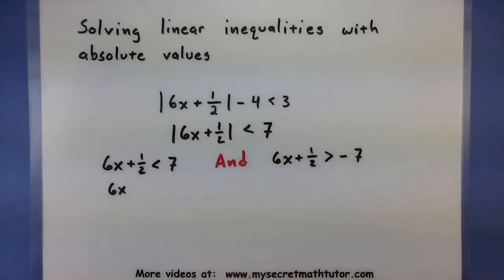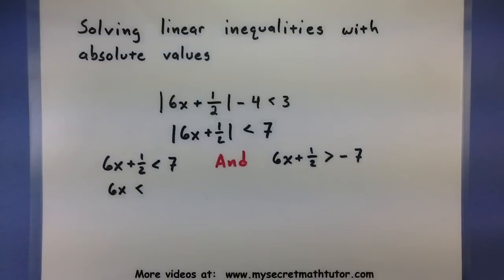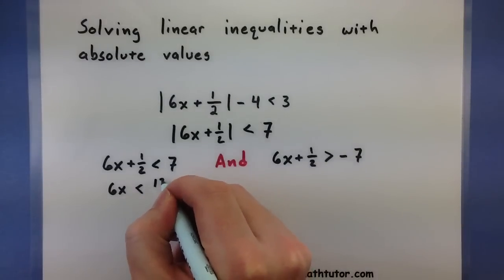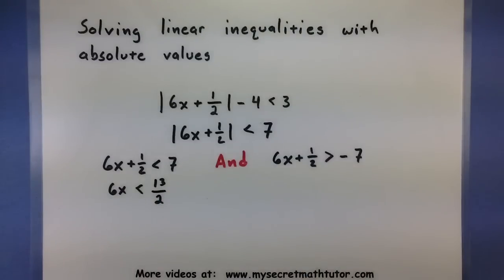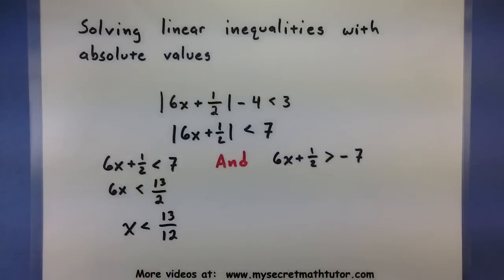Starting with this guy, I can subtract a 1 half from both sides. So 7 minus 1 half is 6 and a half. Let's see, what is that? 13 halves. Not too bad. And it looks like divide by 6. So x is less than 13 twelfths. Perfect. Alright, on to the next one.